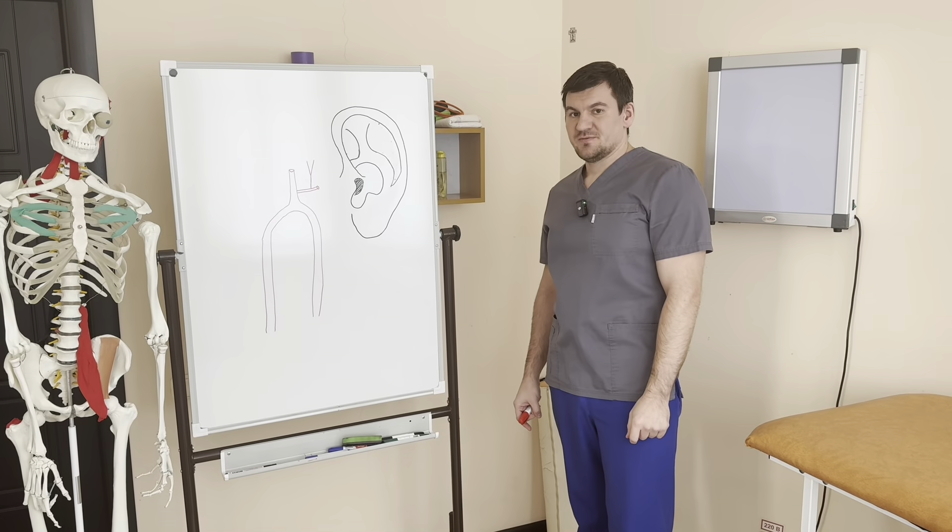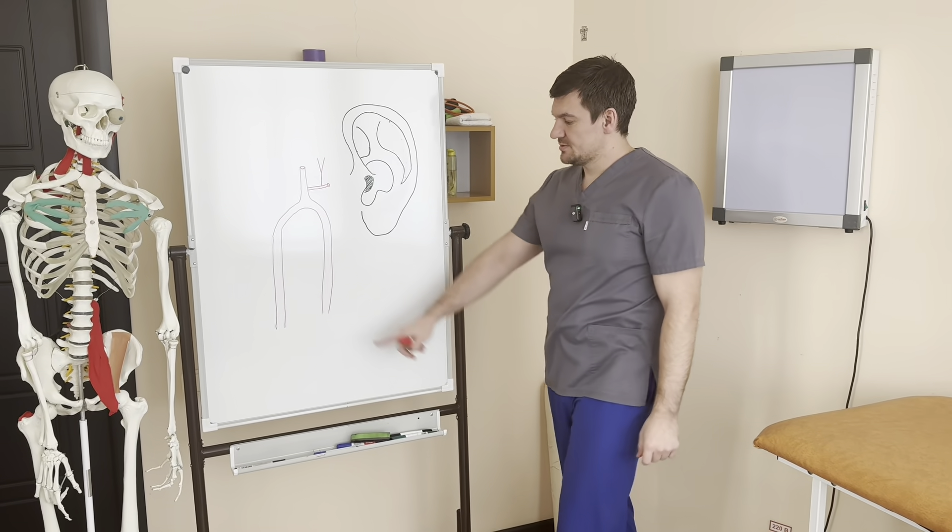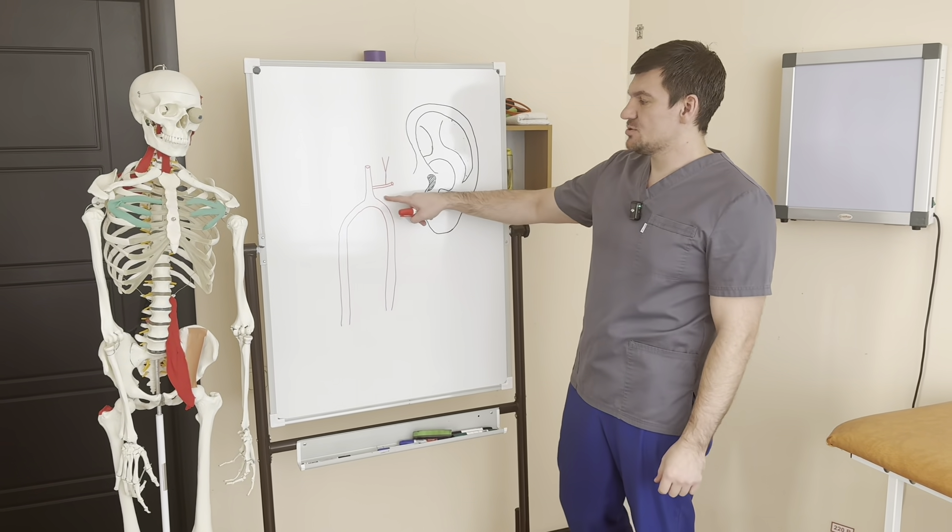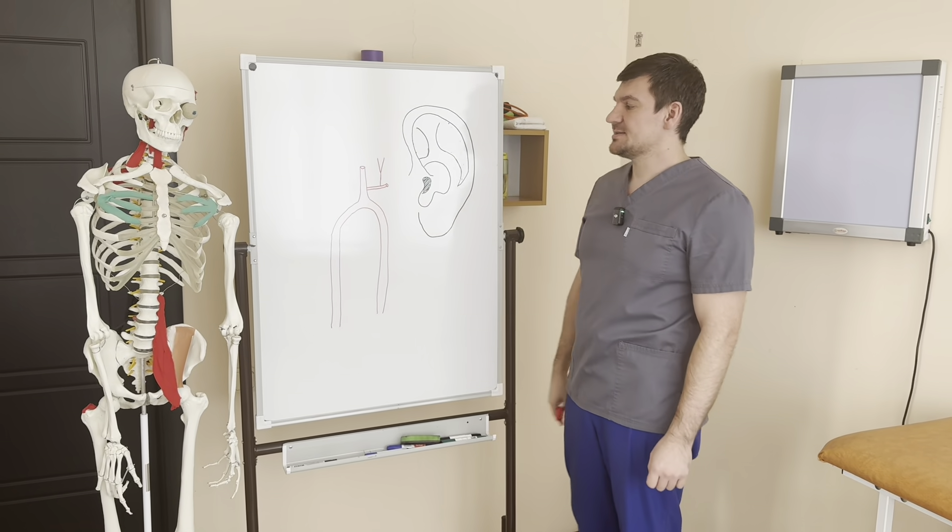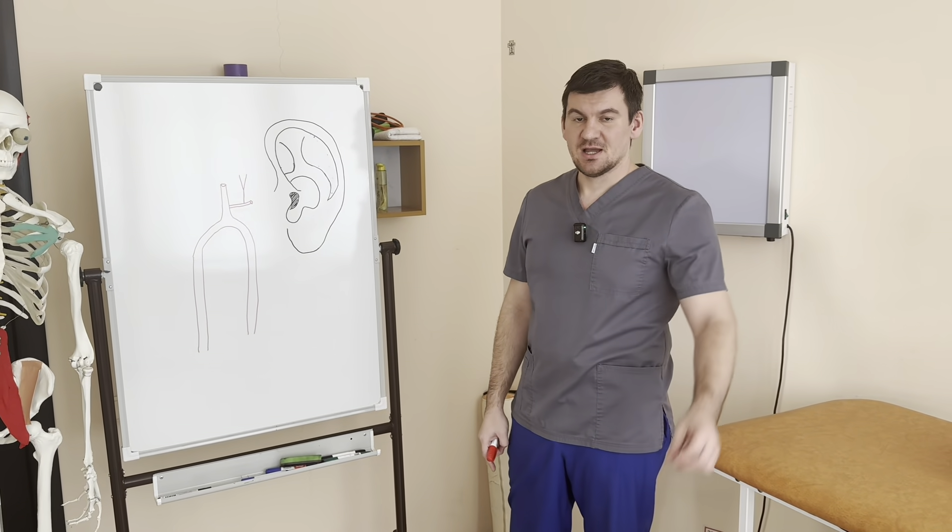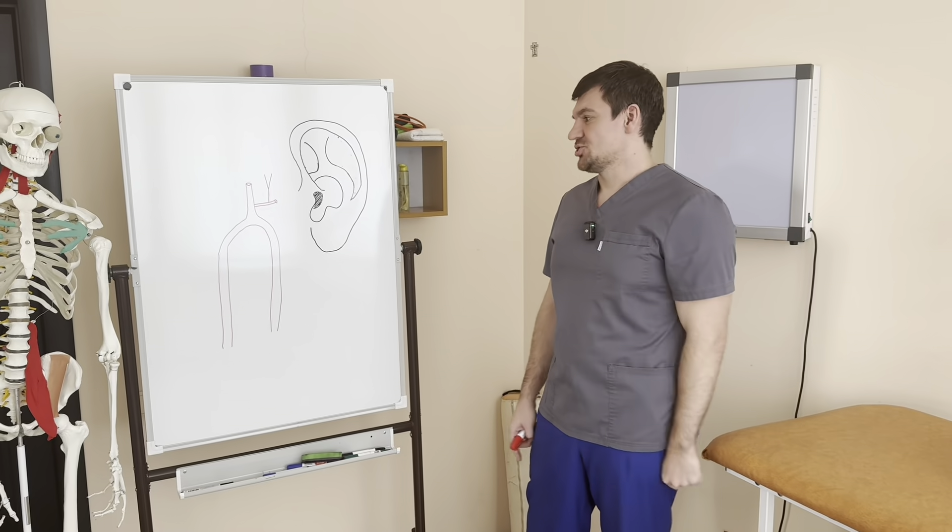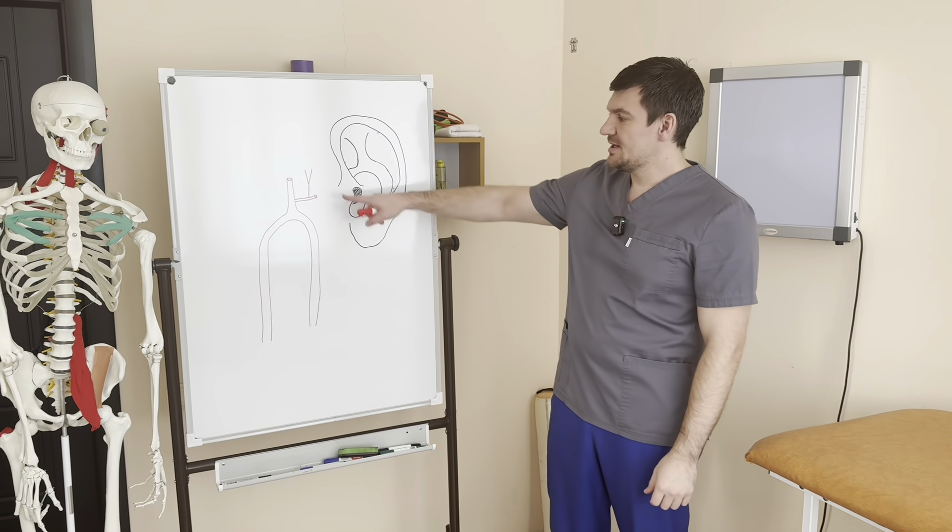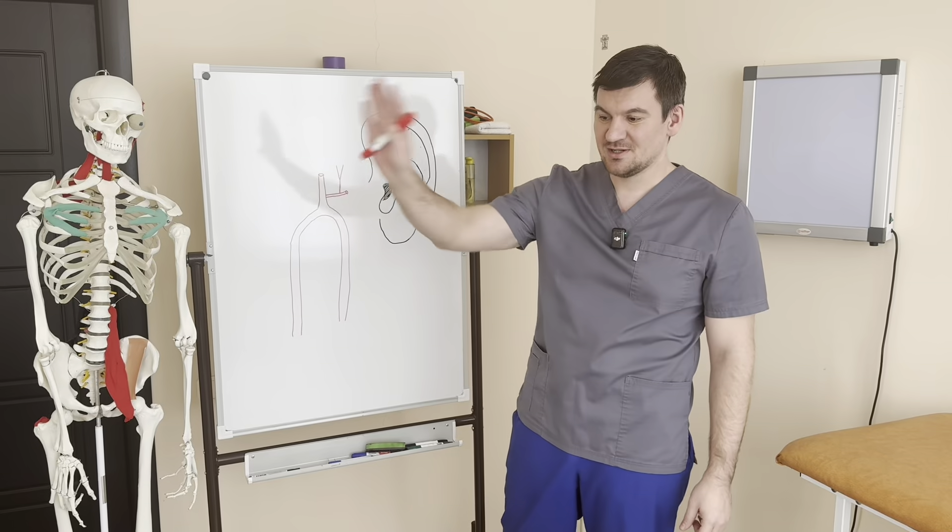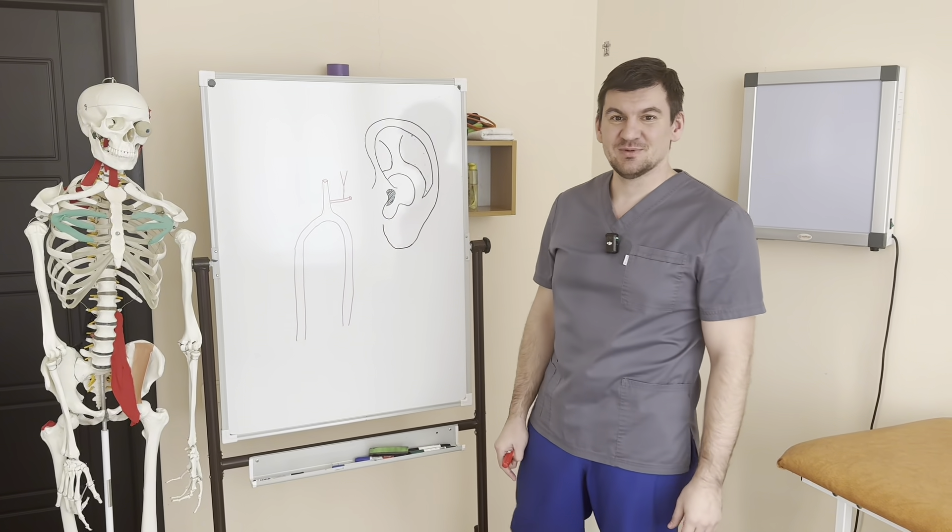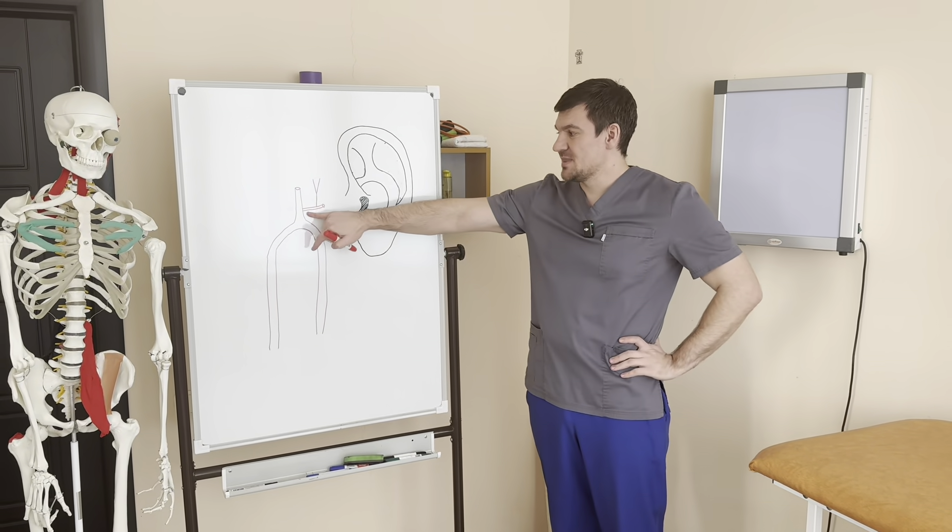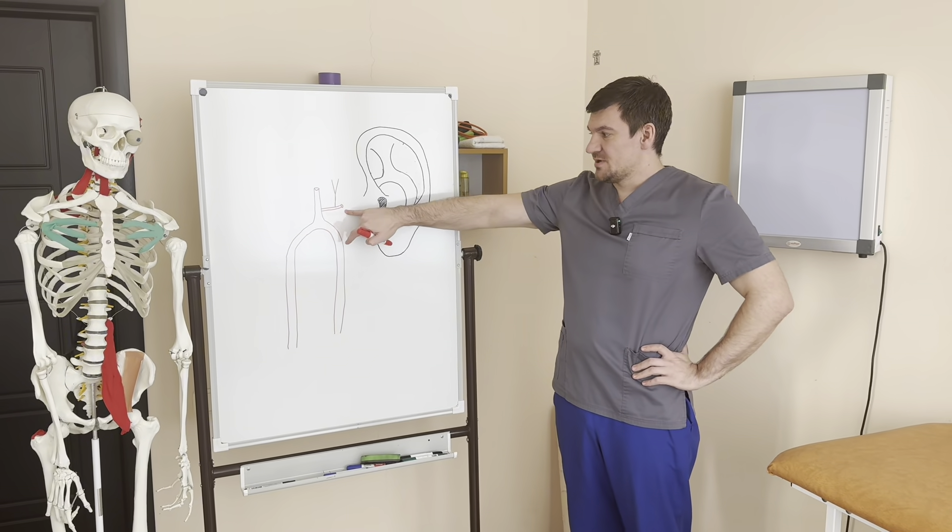You are already familiar with the vertebral arteries - there are two of them, right and left. They unite in the base of the skull into the basilar artery, and from this artery comes the cerebral artery, not just the cerebral artery but the anterior lower cerebellar artery.